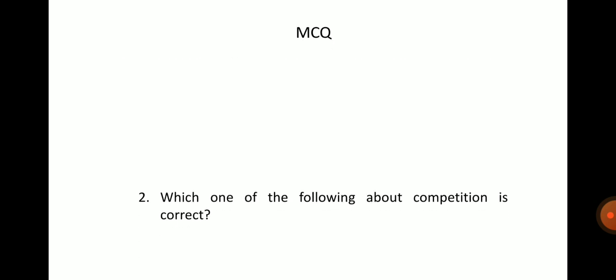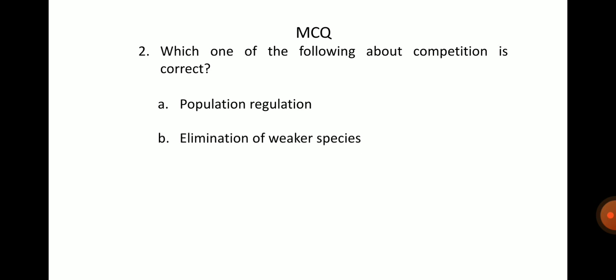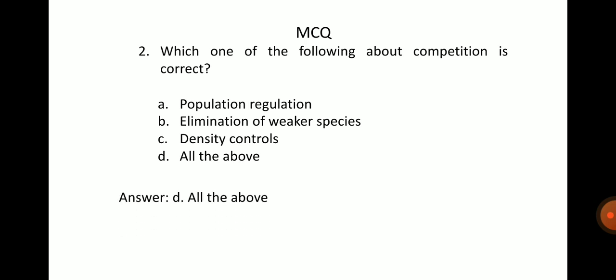Next question: which one of the following about competition is correct? Options: A. Population regulation, B. Elimination of weaker species, C. Density controls, D. All the above. The answer is D, all the above.